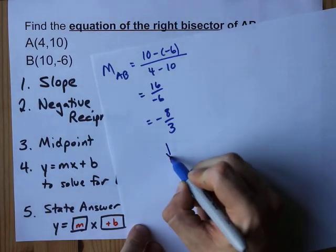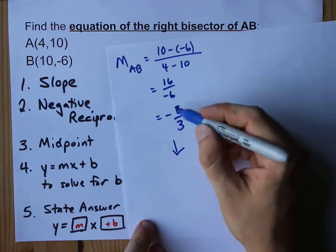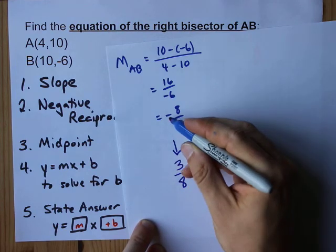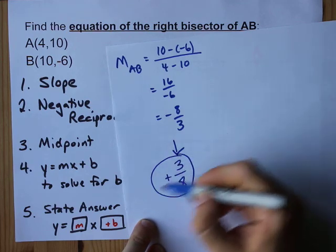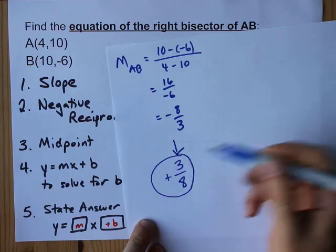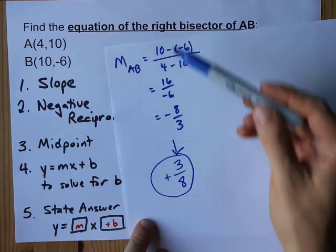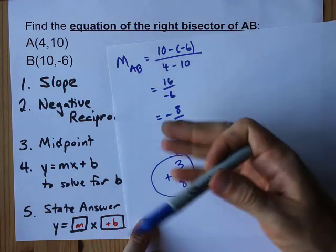What that means is that the slope of the right bisector is flip the fraction, 3 eighths, flip the sign negative to positive. The slope of the right bisector is positive 3 eighths. We know that it is at a right angle to AB because it is a negative reciprocal.